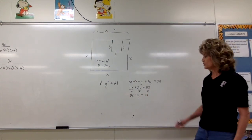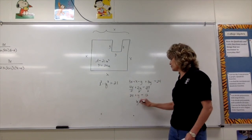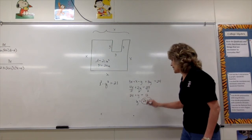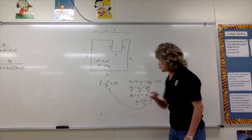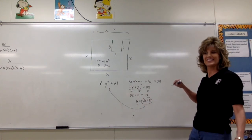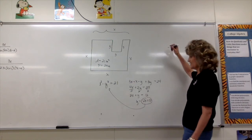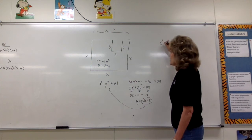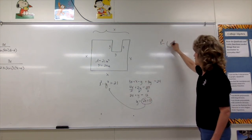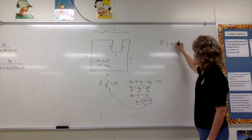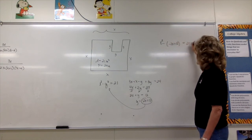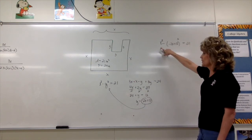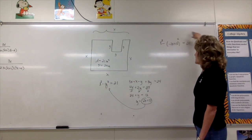Using substitution: y equals negative 2x plus 12. Substituting into x squared minus y squared equals 21: x squared minus (negative 2x plus 12) squared equals 21.